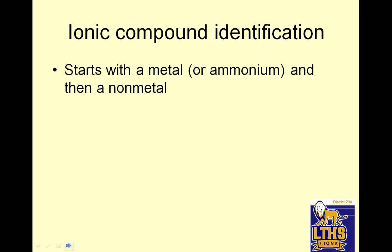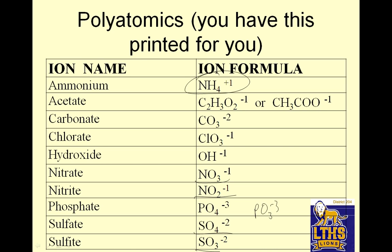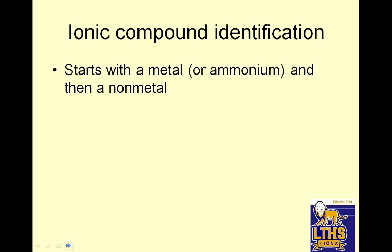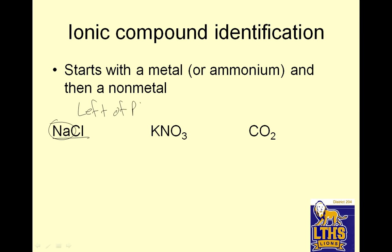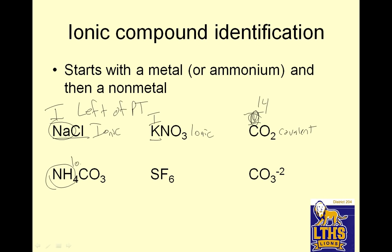Ionic compound identification starts with a metal — or ammonium — and then a non-metal. Ammonium is the only positive polyatomic ion — not ammonia, ammonium. Remember, metals are on the left of the periodic table. Sodium's in group 1, potassium's in group 1. Carbon is in group 14 — that's not a metal, so CO2 is covalent. If it starts with ammonium, it's ionic. If both elements are non-metals, it's covalent. If a species has a charge, it's an ion, not a compound.